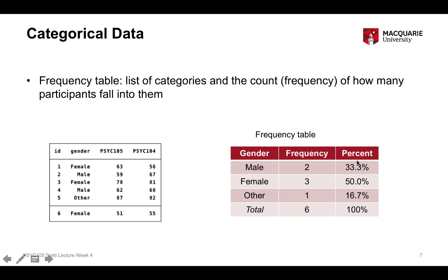We also have a percent column. Percents are a very useful way of interpreting frequencies in terms of comparing the proportions of people across each of the categories. We have six observations in total: two are male (33%), three are female (50%), and one is other (about 17%). The percent column is just the count within that category divided by the total number of observations.